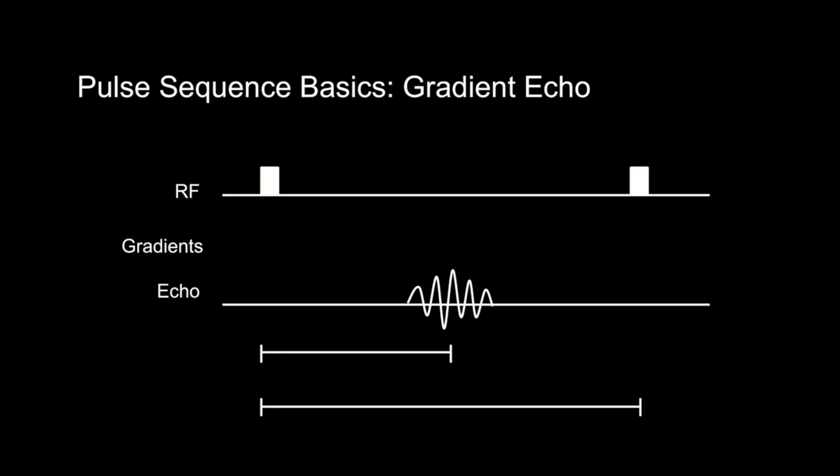Pulse sequences are essentially precisely timed RF pulses, or radiofrequency pulses, and gradients designed to generate MR signal that can be detected and turned into an image. The parameters of the pulse sequence are what will determine the tissue contrast, for example whether they are more T1 or T2 weighted.